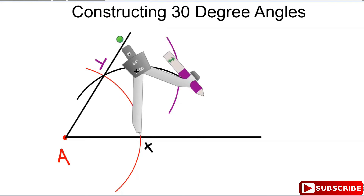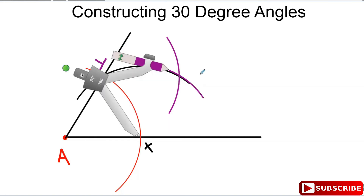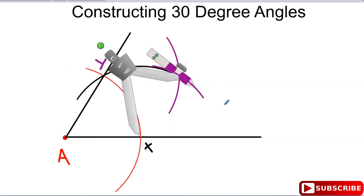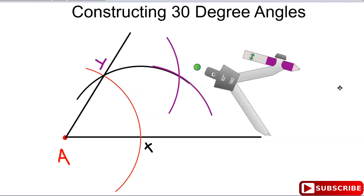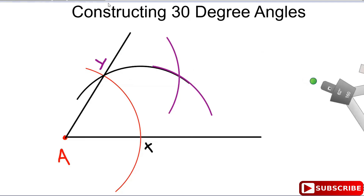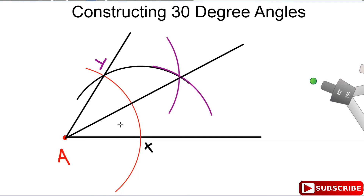You're going to swing an arc from X using the same degree of swing that you used from Y. Swing the arc from X. After you do that, put down your compass, take up your pencil, and draw a line from A passing through the two intersections of the two swings from Y and X.